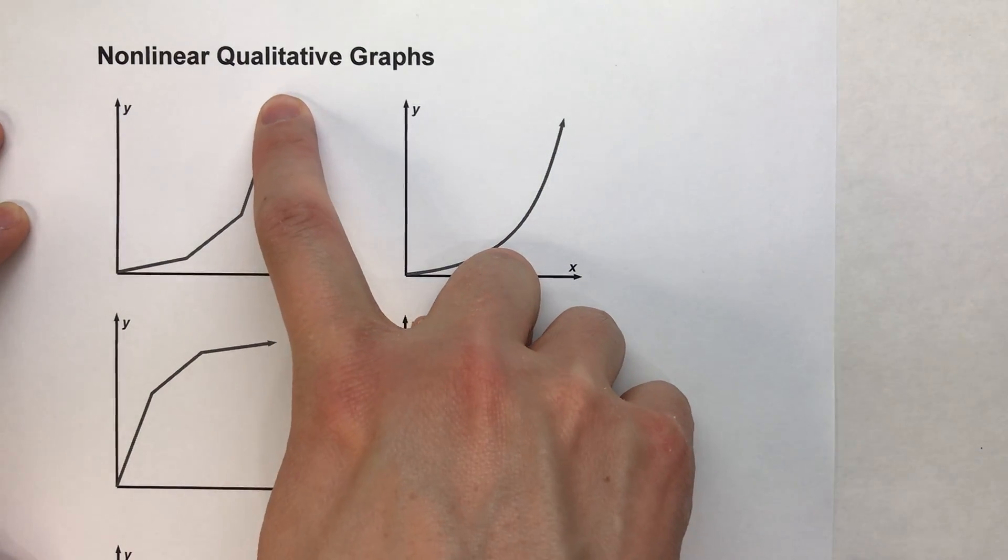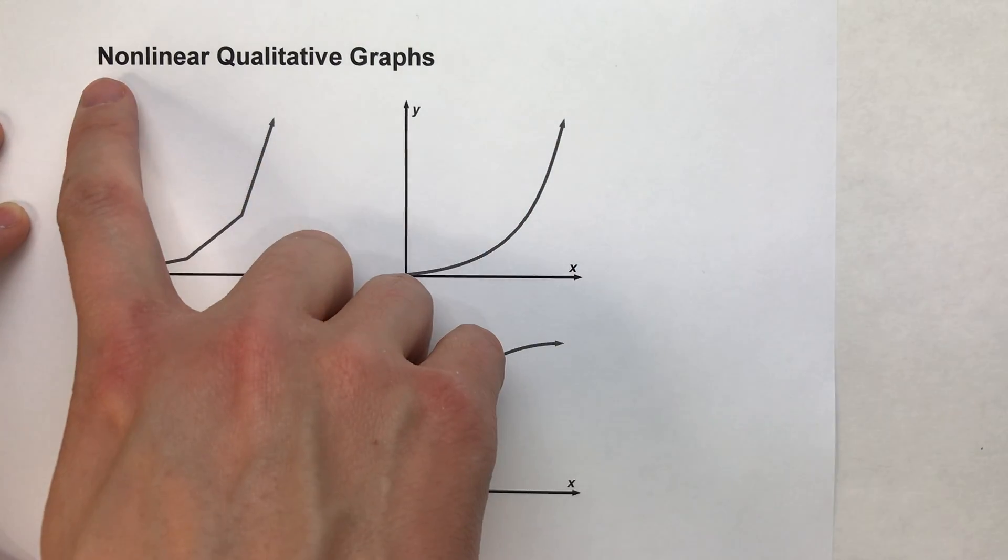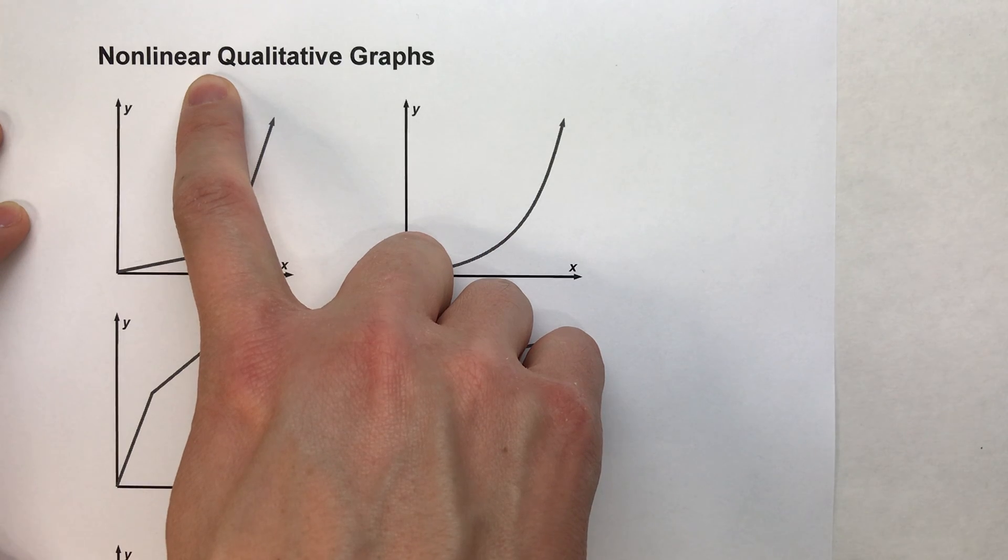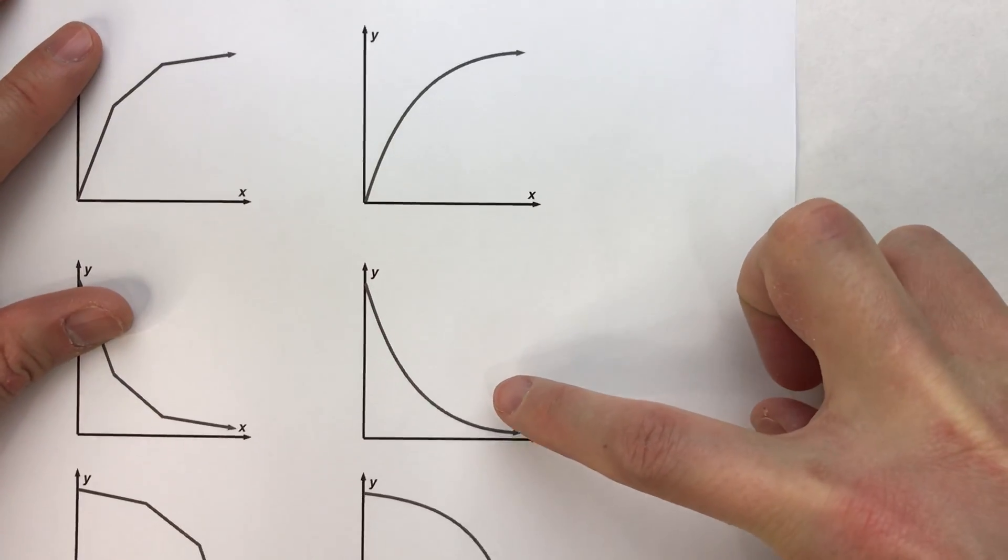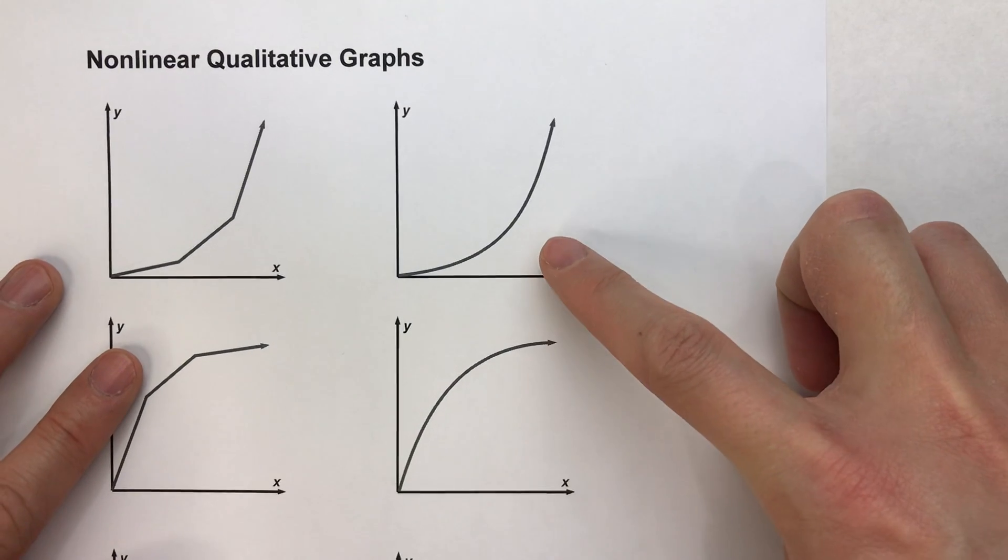So today we are looking at qualitative graphs that have nonlinear parts. So for example, these graphs on the right where they're curves.